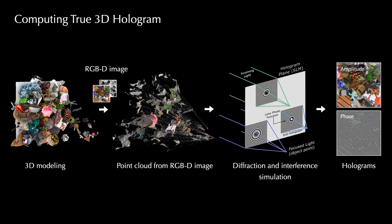the conventional point-based method renders an RGB depth image for a modeled 3D scene, and physically simulates light diffraction and interference for all 3D points to obtain a complex-valued hologram.